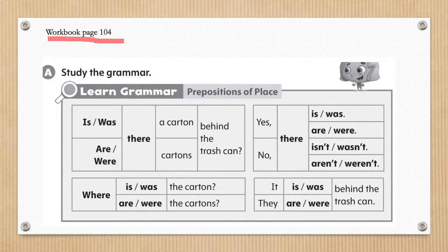Okay, so the grammar that we will be learning today has to do with prepositions of place. Prepositions of place are words that help us understand where something is. Examples: behind or on top, in front of, next to, across from, in, on, and many others.